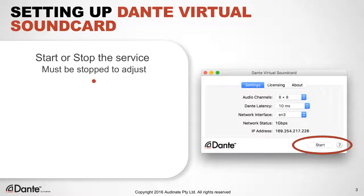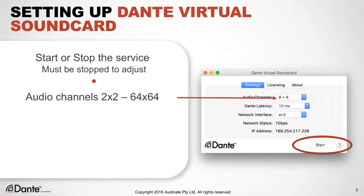Let's look at the initial adjustment to Dante Virtual Soundcard. When you open the Dante Virtual Soundcard application, you can start or stop the service. Adjustments can only be made while Dante Virtual Soundcard is stopped. Audio channels allow you to set the number of channels to match your project needs, from 2x2 up to 64x64. Use only as many channels as needed to reduce unnecessary computational overhead.